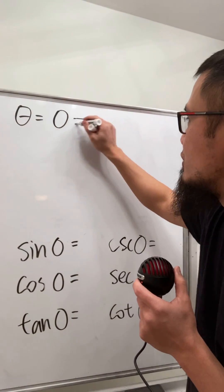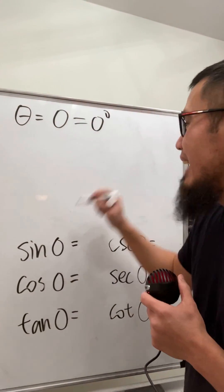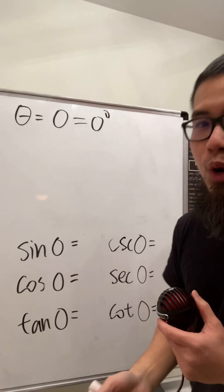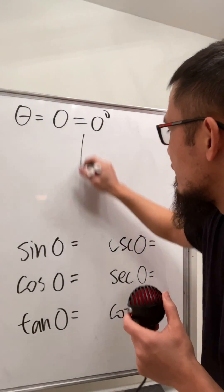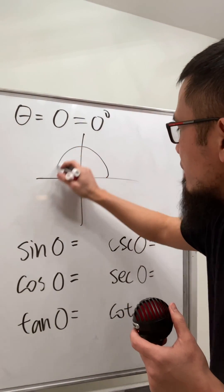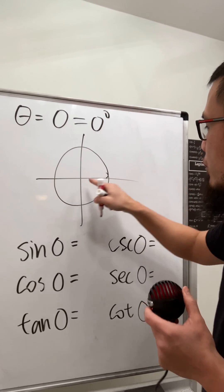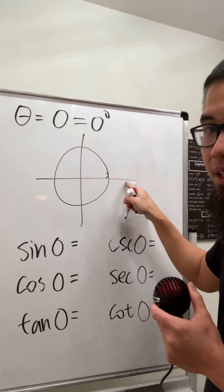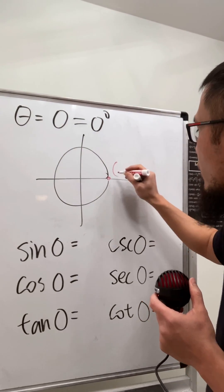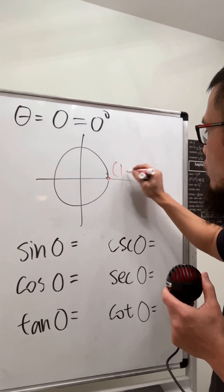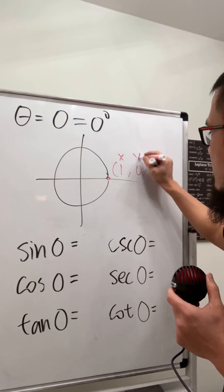The angle is zero degrees, which is a quadrantal angle. We go ahead and call out the unit circle. At zero degrees, the point on the unit circle has the coordinate (1, 0), where 1 is the x-value and 0 is the y-value.